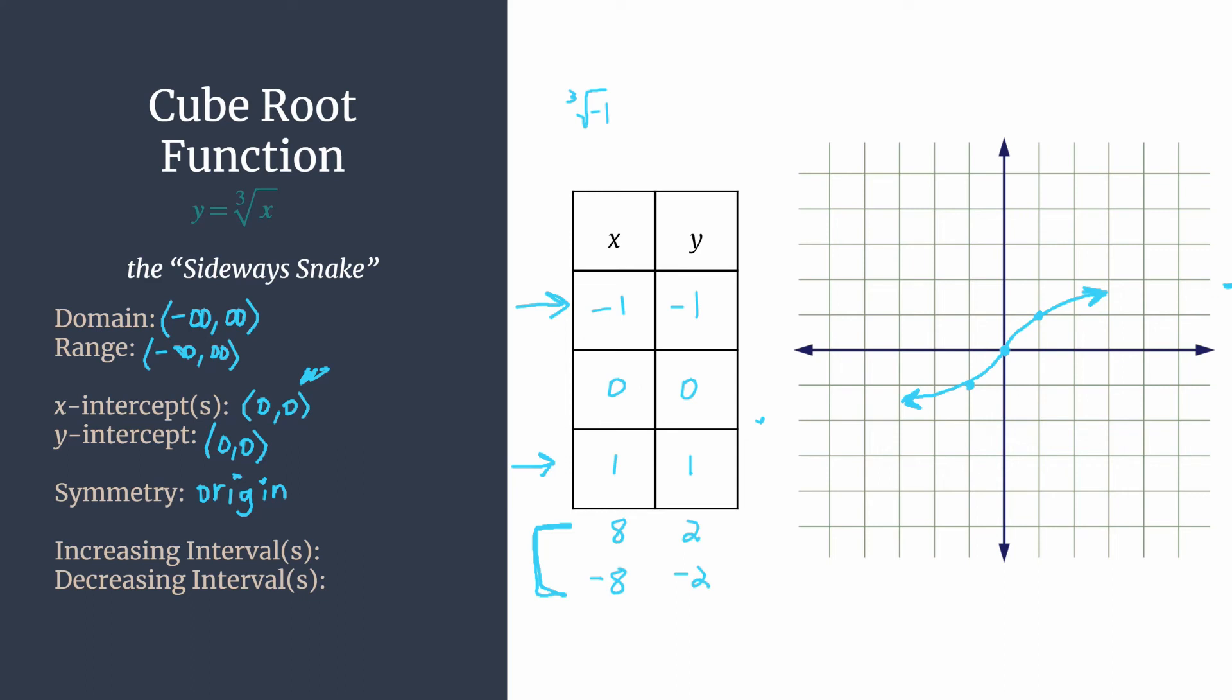Okay, so those are just good specific examples of this origin symmetry we see. And remember, if a function has origin symmetry, we can name it odd, a special type of function, an odd function.